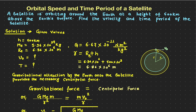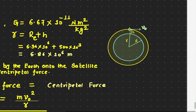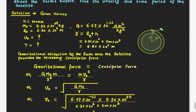In this video we're going to find out the speed and the time period of a satellite which moves in a particular orbit. Here a satellite is moving in an orbit which is 500 kilometers from the Earth's surface, and we have to find out the orbital speed — the uniform speed at which it moves in that particular orbit. First, let's write down all the given information. The height given is 500 kilometers.